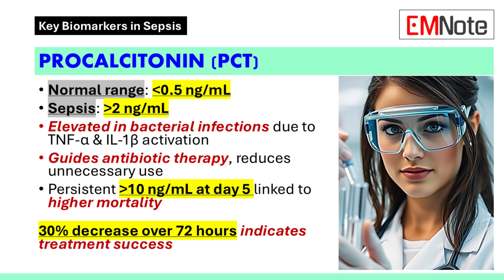In bacterial infections, procalcitonin is synthesized in the lungs, liver, and kidneys due to the activation of tumor necrosis factor alpha and interleukin-1 beta. Viral infections generally induce weaker responses in procalcitonin levels. Clinically, procalcitonin is used to distinguish bacterial sepsis from non-infectious systemic inflammatory response syndrome.